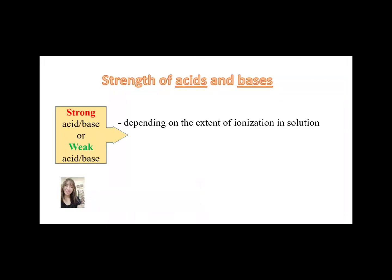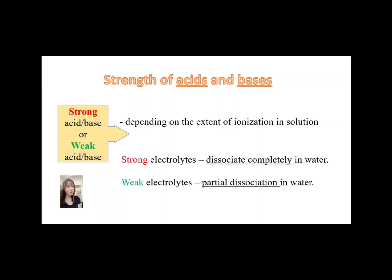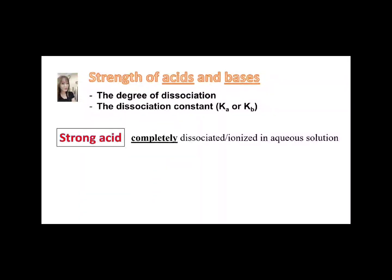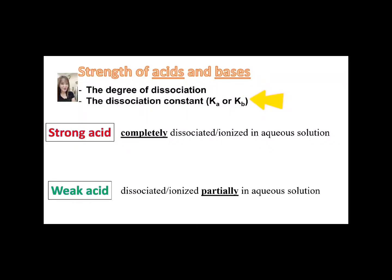Acids and bases can be strong or weak depending on the extent of ionization in solutions. So, if the acid or base conducts electricity strongly, that means it is a strong acid or strong base. Besides the molecular formula, the strength of acids and bases can be compared in terms of degree of dissociation and acid-base dissociation constant.